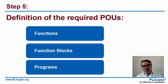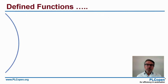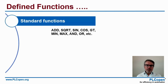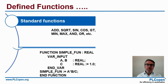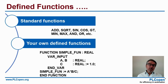Step five: the definition of the required POUs — Program Organization Units. There are three types: functions, function blocks, and programs. There are standard functions like addition, sin, cos, and, or, min, max — and you can define your own. This is an example of a simple function: you have some inputs, an output, and you're done.